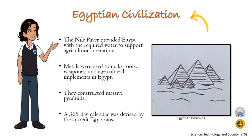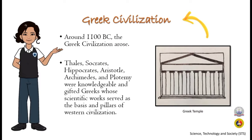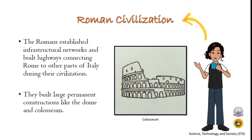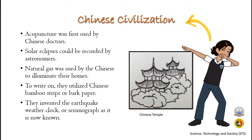The ancient Egyptians constructed massive pyramids and devised a 365-day calendar around 1100 BC. The Greek civilization arose; Thales, Socrates, Hippocrates, Aristotle, Archimedes, and Ptolemy were knowledgeable and gifted Greeks whose scientific works serve as the basis and pillars of western civilization. The Romans established infrastructural networks and built highways connecting Rome to other parts of Italy, and they built large permanent constructions like the dome and the Colosseum. The plow was invented and the lunar calendar was developed.